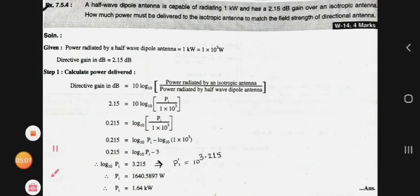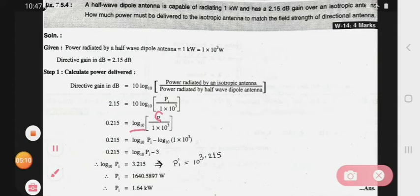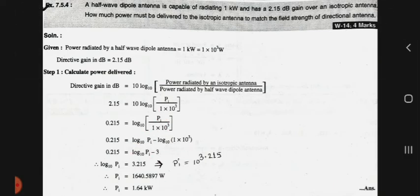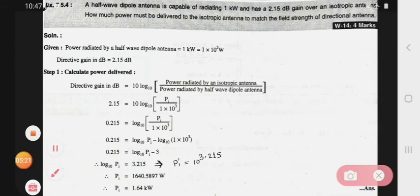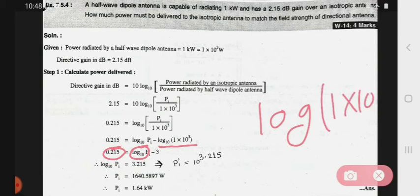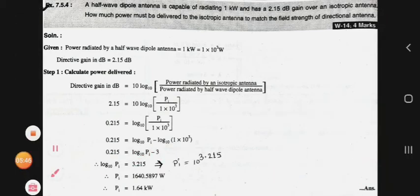So you have to write this as log 10 Pi minus log 10 of 1 into 10 raise to 3. After writing this you have to solve. The gain remains same. Using calculator, log of 1 into 10 raise to 3 equals 3.